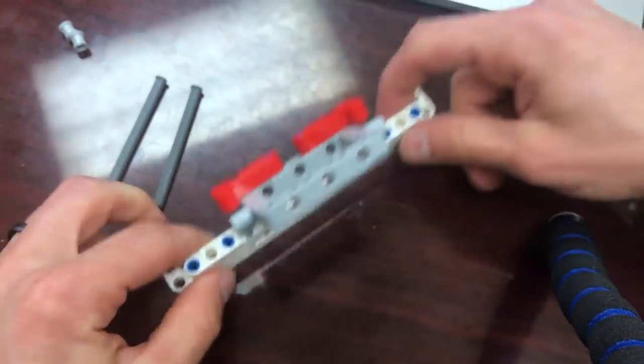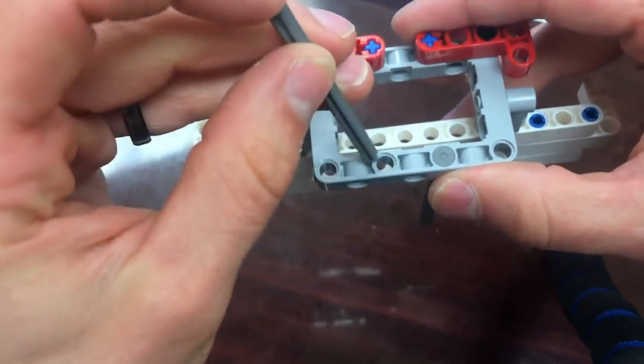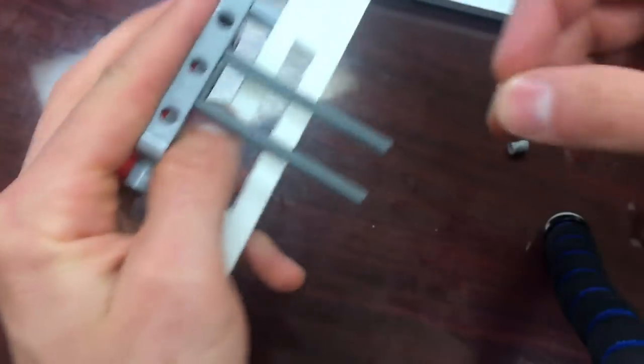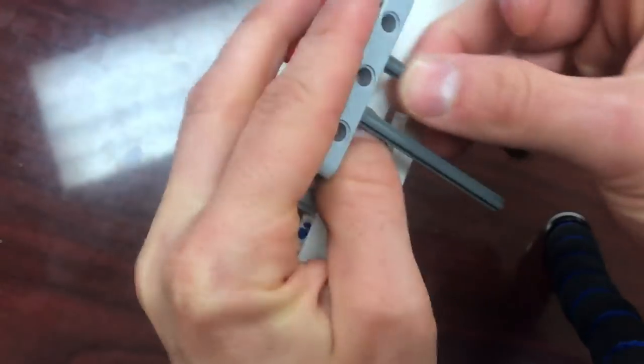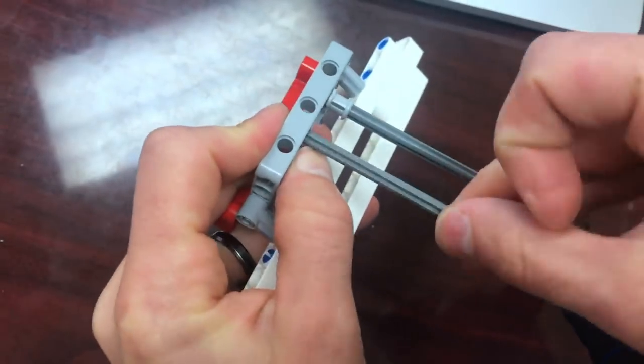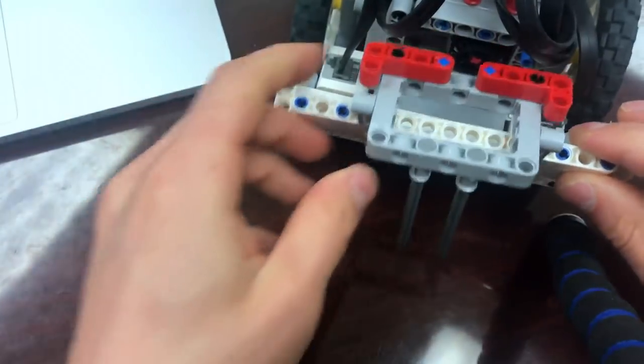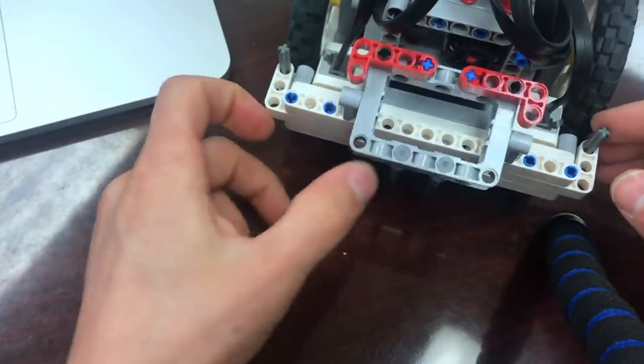All right, so we're almost done. The last thing I'm going to do is I'm going to take through the two center holes of the picture frame these two number eight axles with stoppers on the end and then I'm going to put the bushings on the bottom of those just like that. Now that's it, that attachment is made, it's ready to be put on to the robot and ready to use.